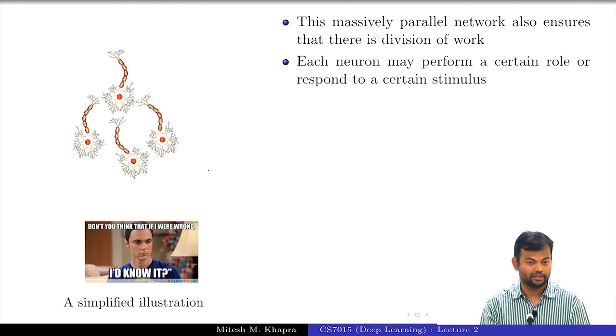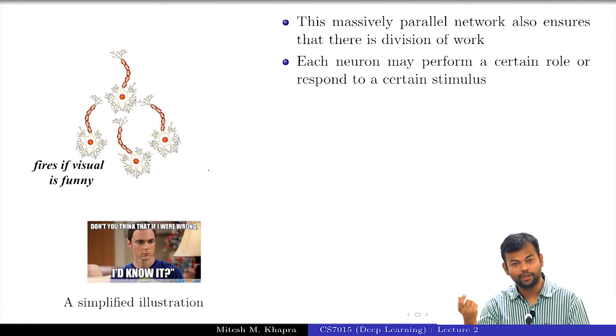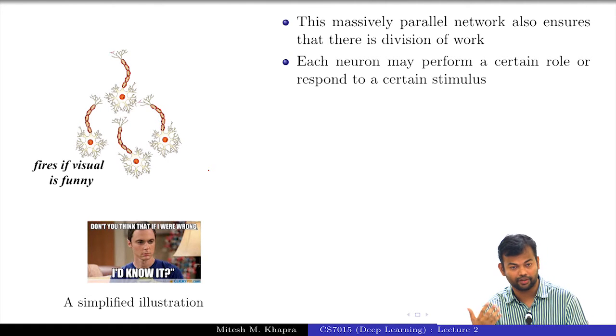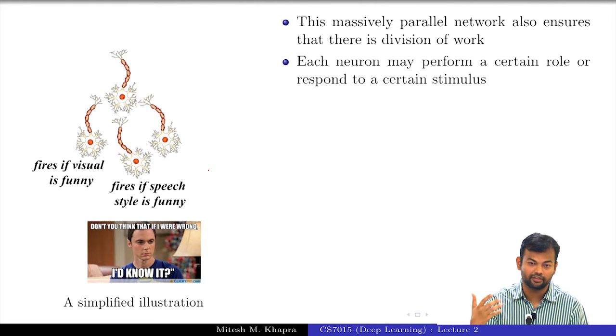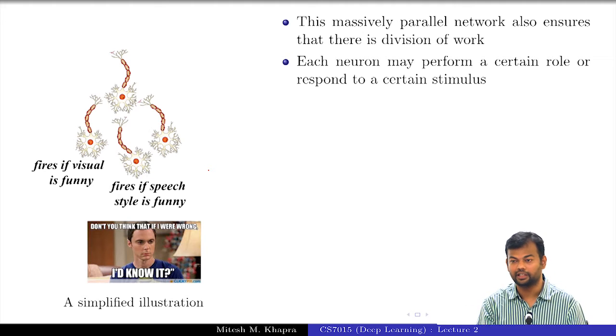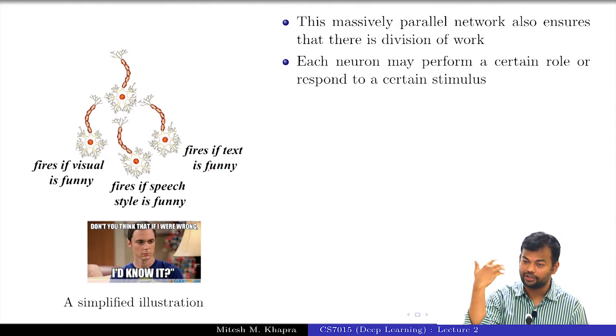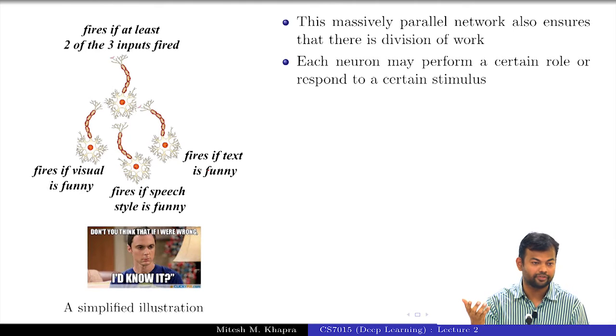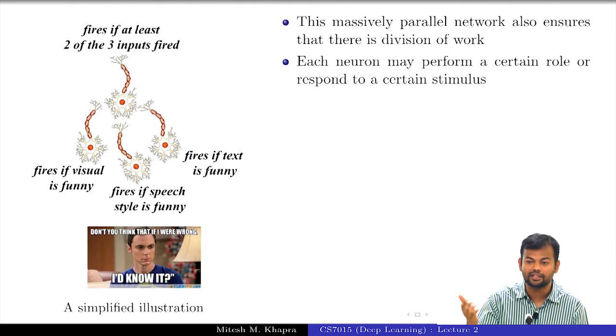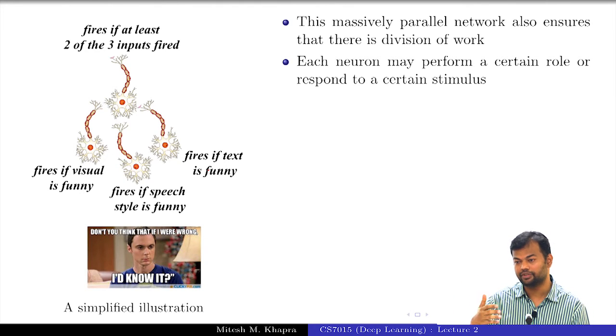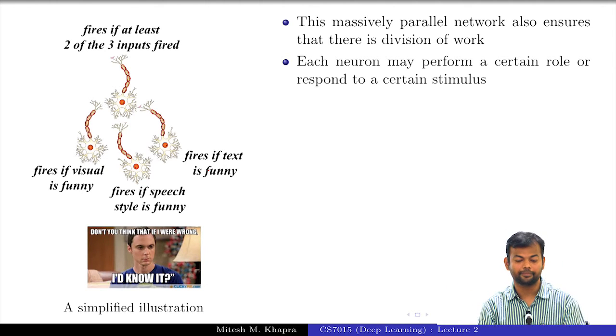For example, in this cartoonish example that we took, there might be this one neuron which fires if the visuals are funny. Whatever you are seeing is funny. There might be one neuron which finds Sheldon's speech to be funny, the way he speaks, that might be funny, and there might be another neuron which actually finds the dialogue content to be funny. And now, all of this pass on the information to the next level, and this guy would fire if at least two of these three inputs are funny. That means, I have some threshold based on which I decide whether to react or not. If it is really funny then only I laugh. Otherwise I will not laugh.